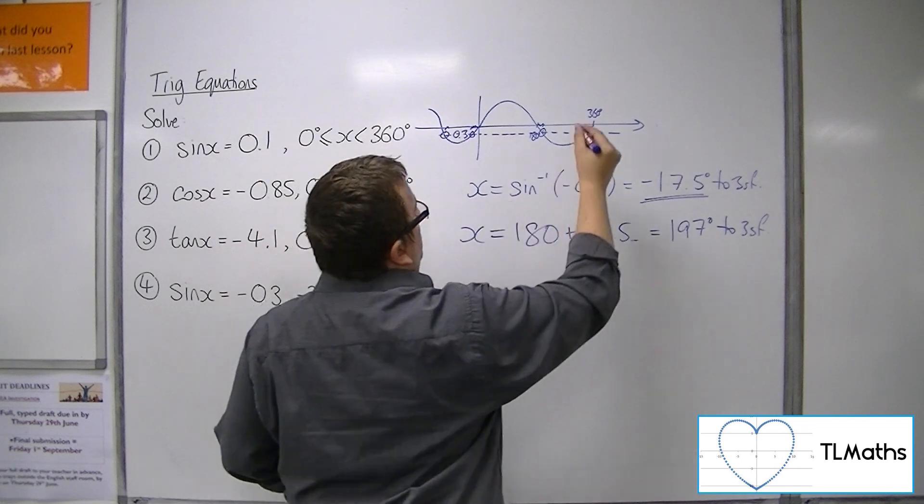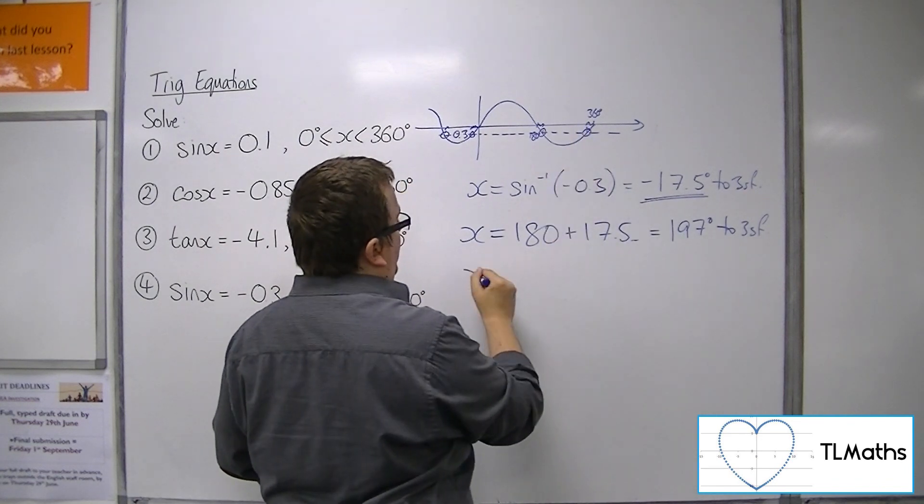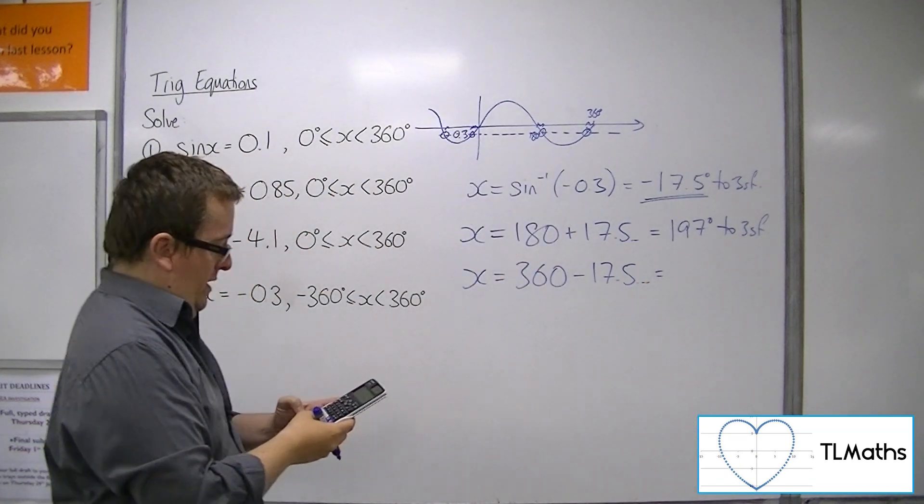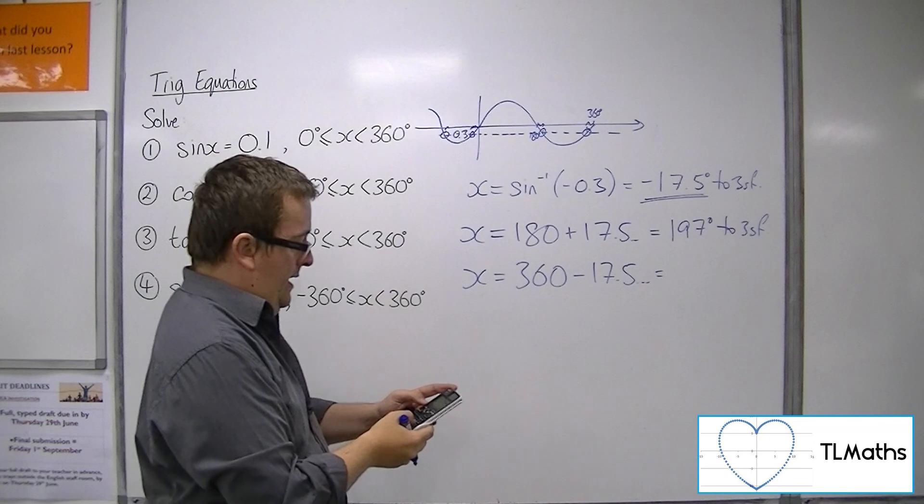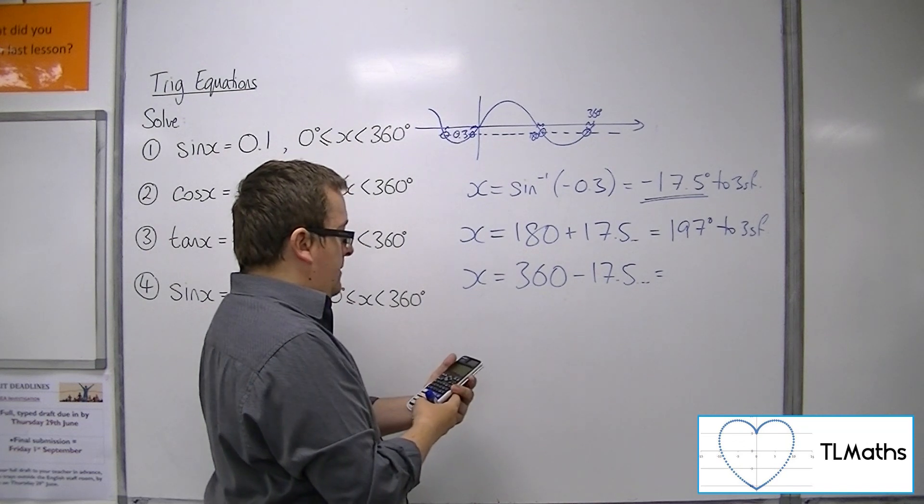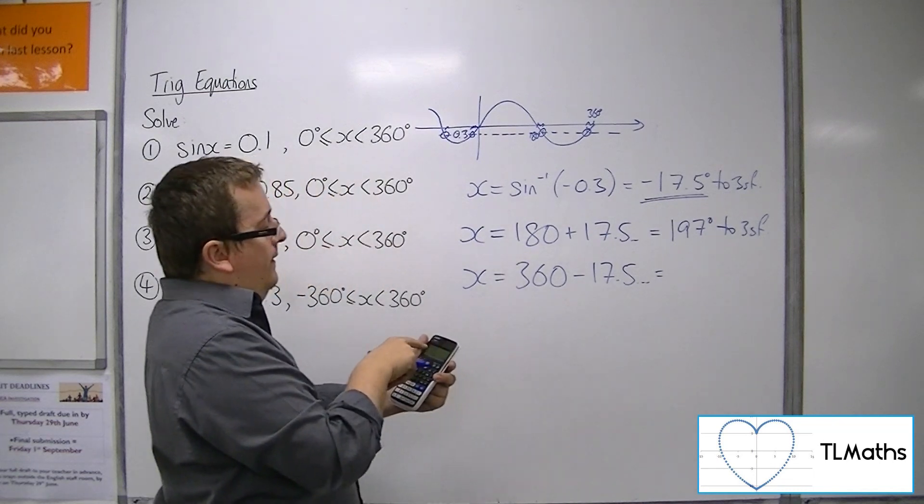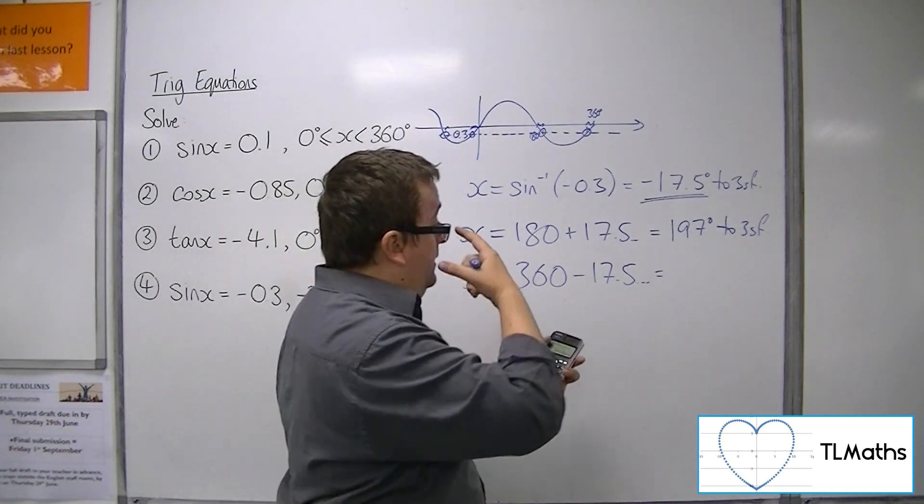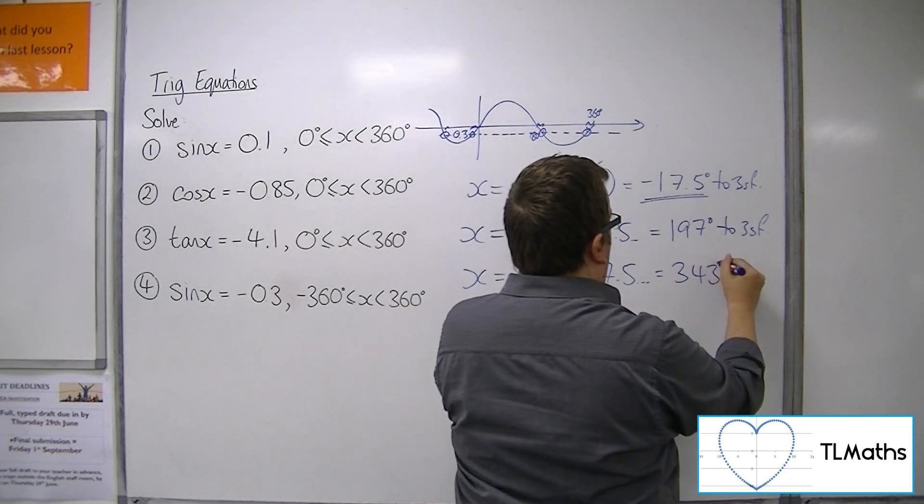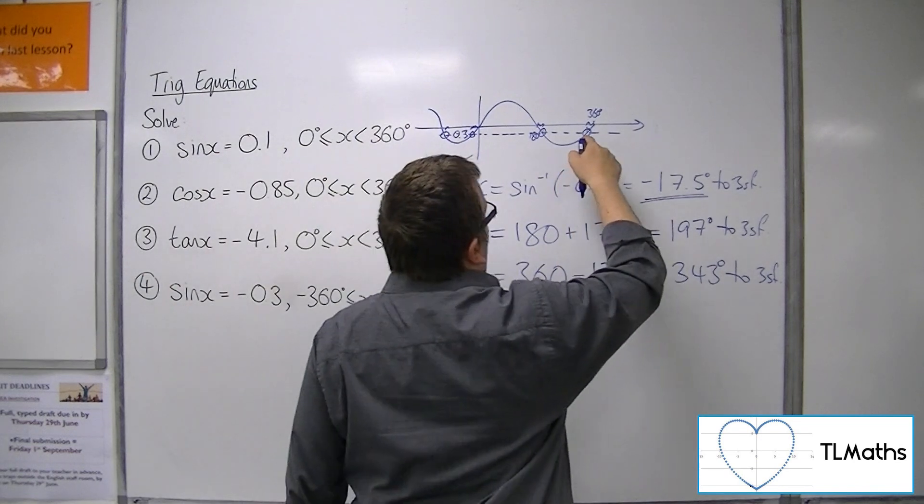Then if that's 197, that bit is also 17.5 degrees away from 360. So 360 take away the 17.5. I'm going to use the original calculator display problem, the solution that I had before on the calculator, and I get 342.5423969. So 343 degrees to 3 significant figures. So I've got that one, I've got that one, I've got that one.